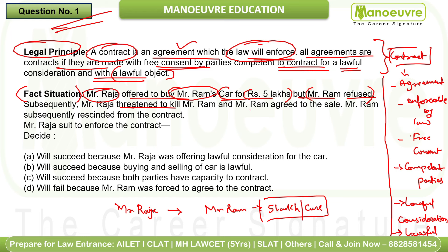Subsequently, Mr. Raja threatened to kill Mr. Ram, and Mr. Ram agreed to sell. What happened here is that after Ram refused, Mr. Raja threatened him, and because of that threat, Mr. Ram agreed to the sale.